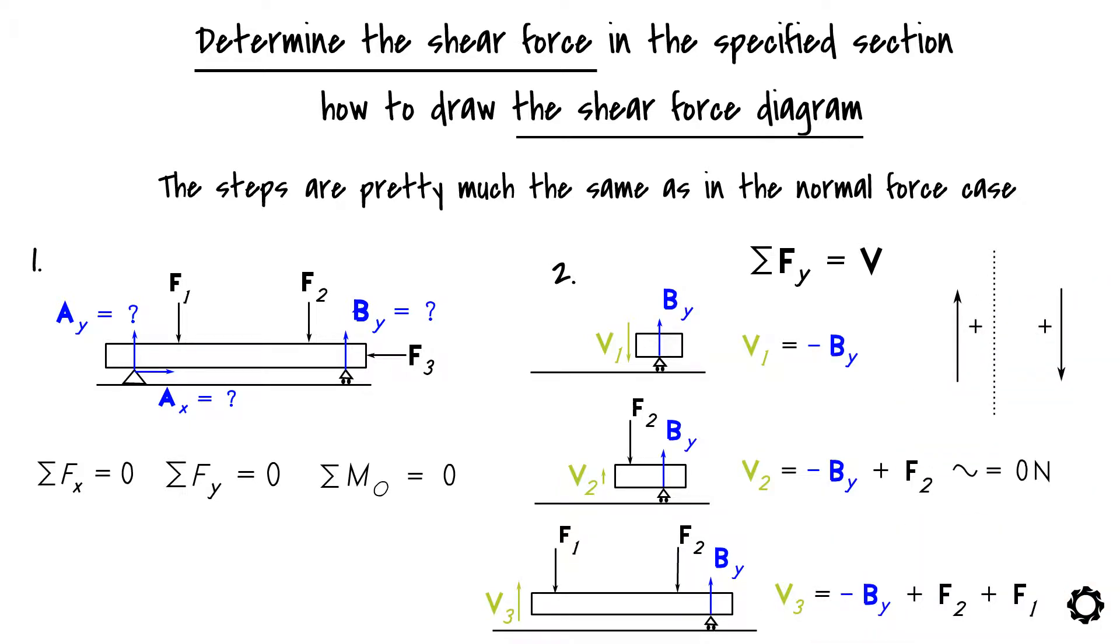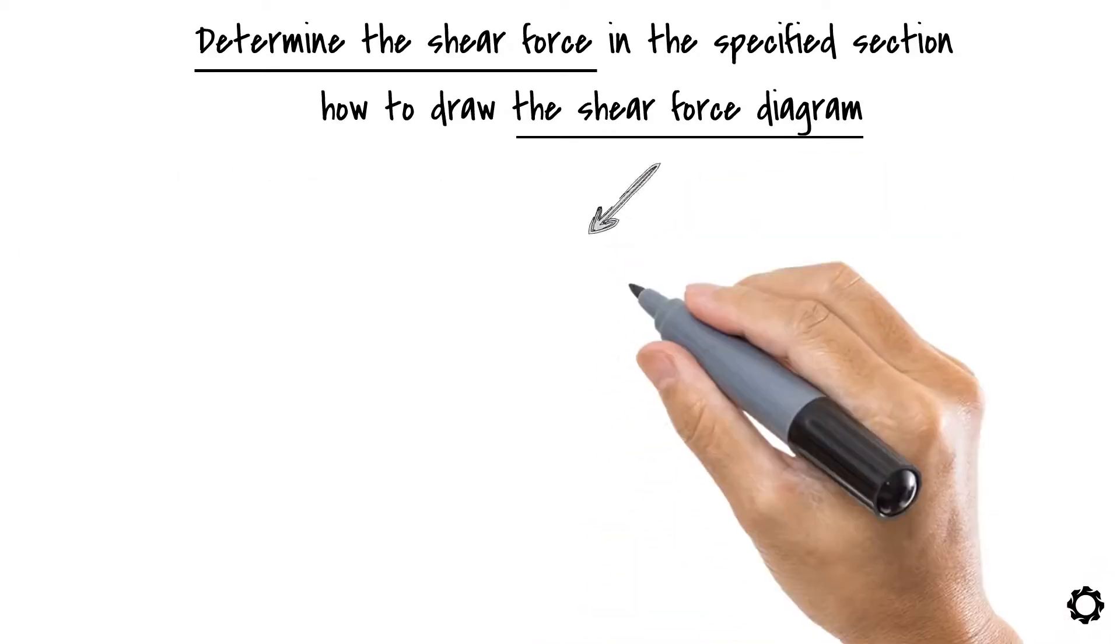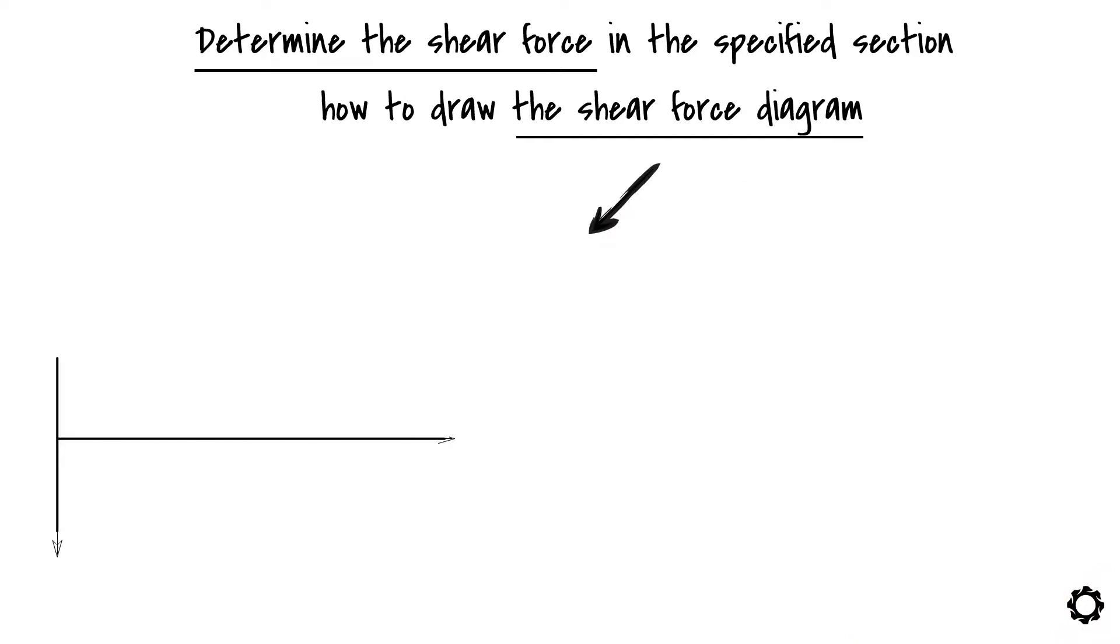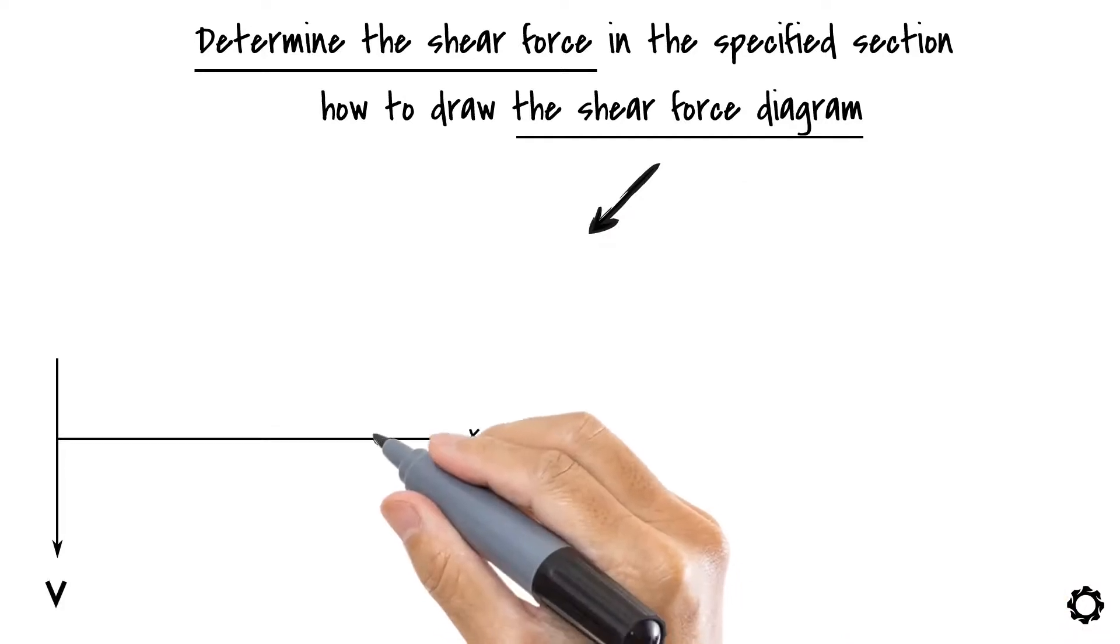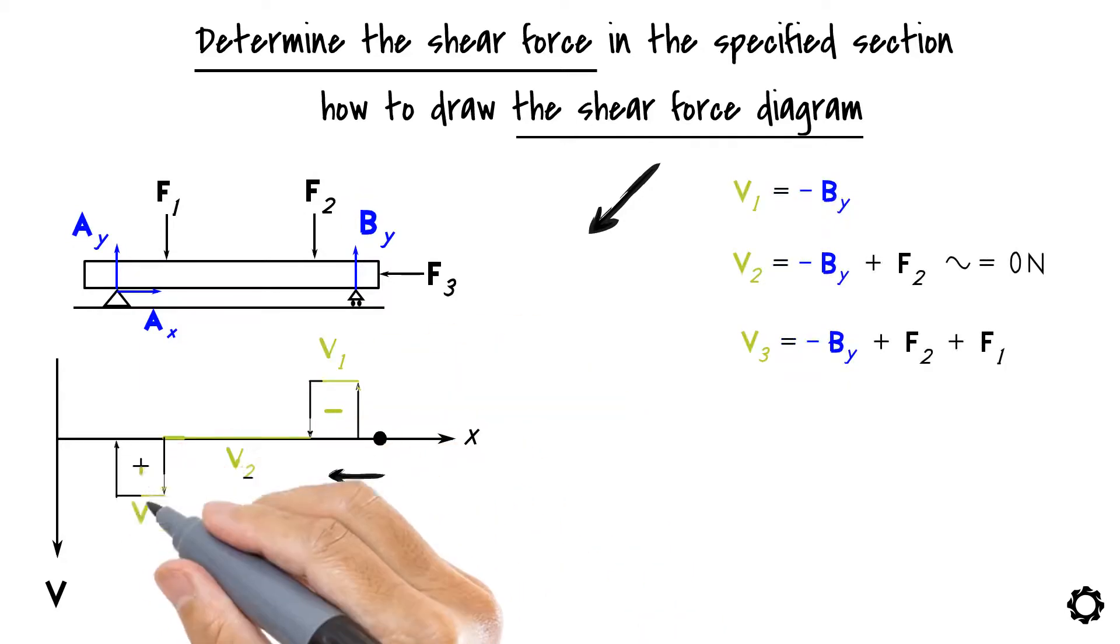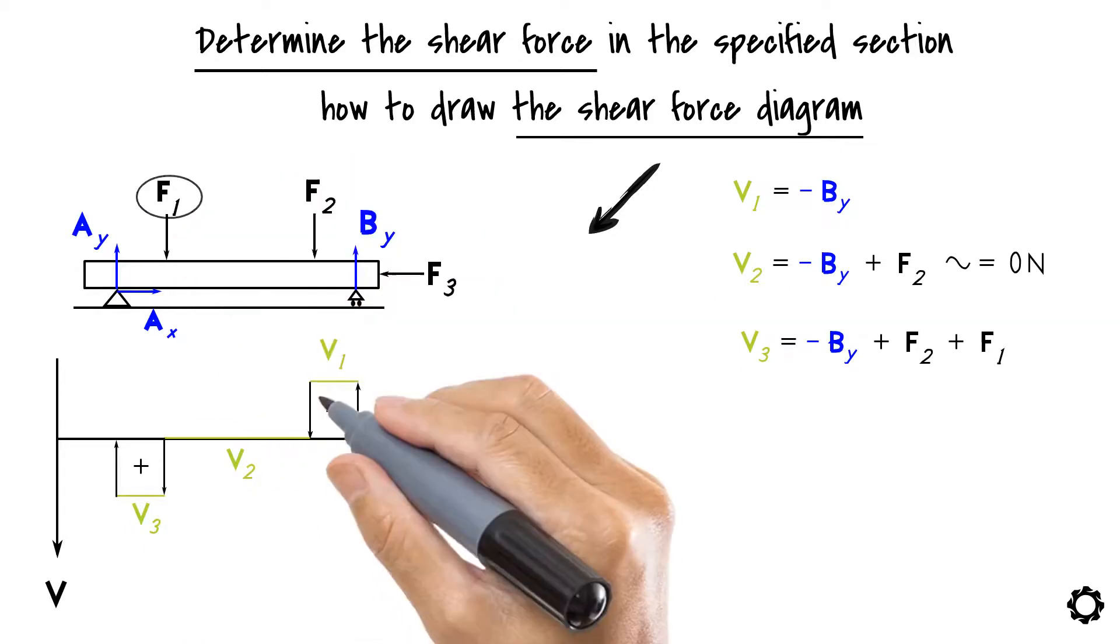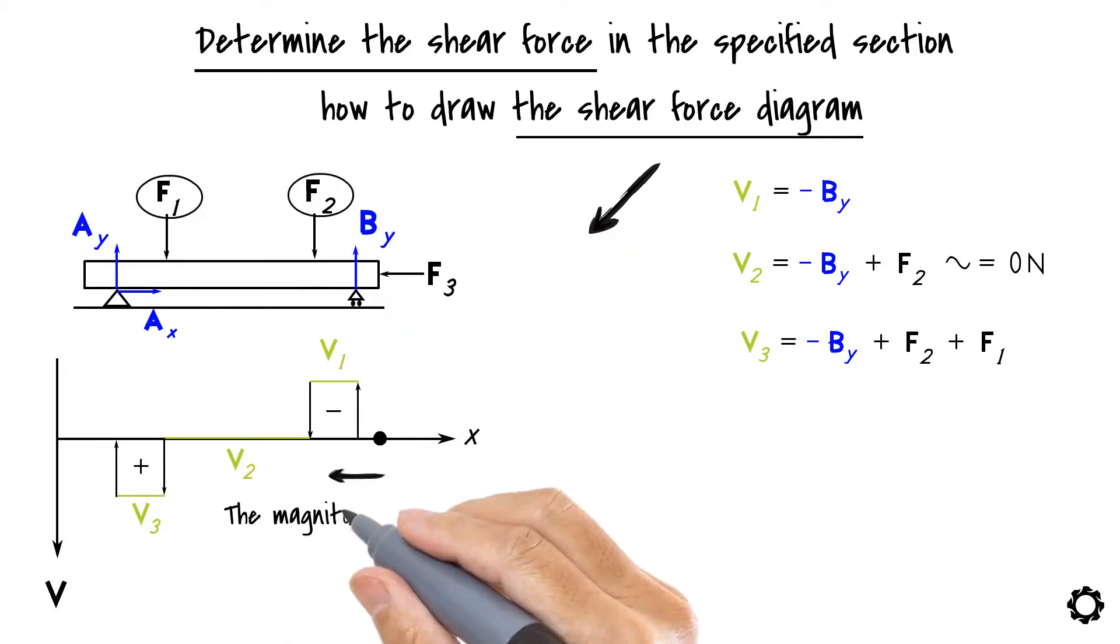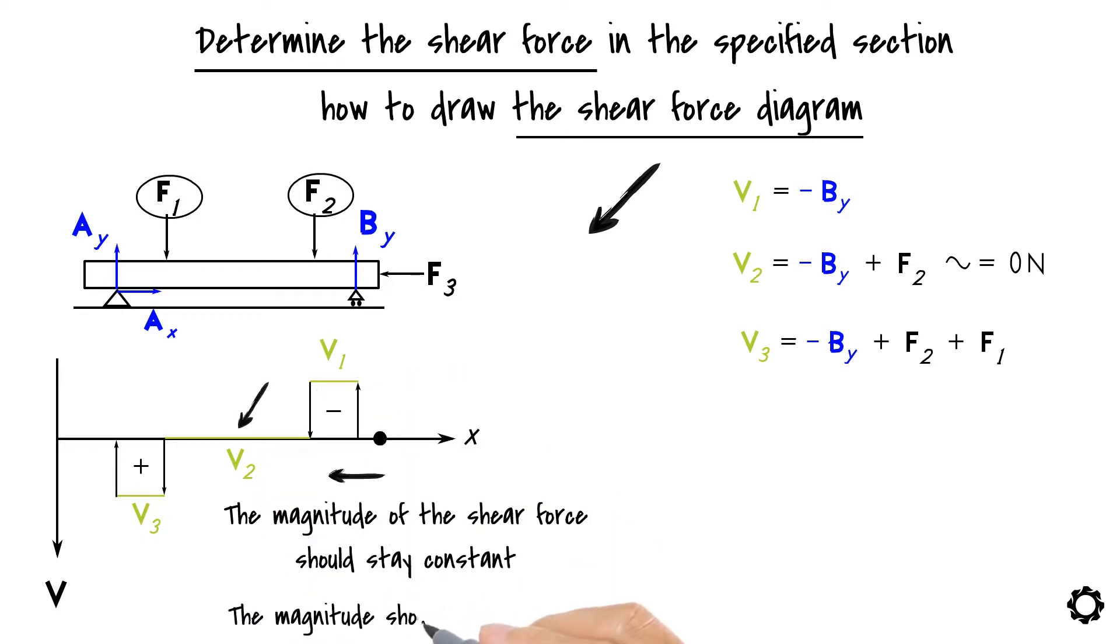After you have determined the shear force in each critical section of the structure you can begin to sketch the shear force diagram. Like in the normal force situation, start travelling from the right end of the structure to the left while also transferring each shear force value onto the diagram. Just remember that between the two vertical forces the magnitude of the shear force should stay constant while proceeding in the diagram and also that the magnitude should be zero at the other end of the structure.